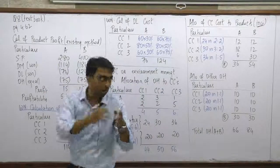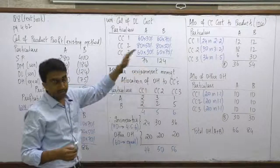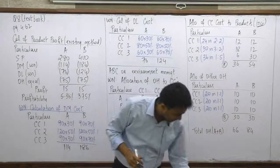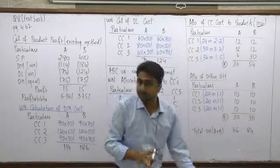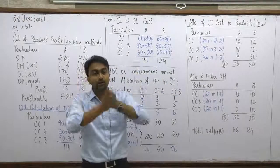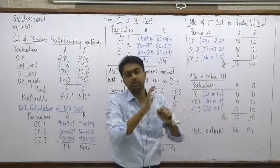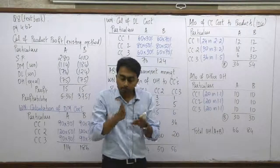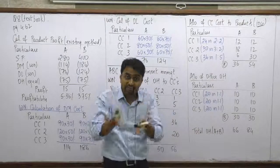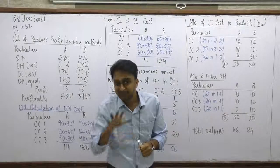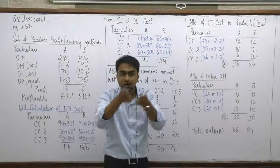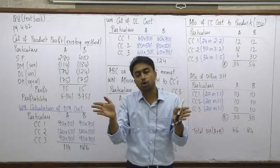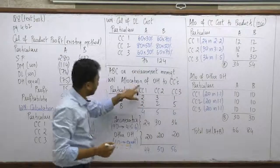Moving on to activity-based costing or environmental management accounting. Out of ₹150 total overheads, ₹90 per kg is linked to the incinerator. The first job is to allocate the incinerator costs among the cost centers. The ultimate objective is to allocate incinerator costs to the respective products, but that's a second-layer step — first, allocate among cost centers, then allocate from cost centers to Grade A and Grade B.